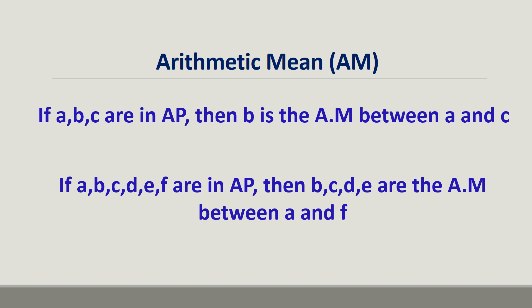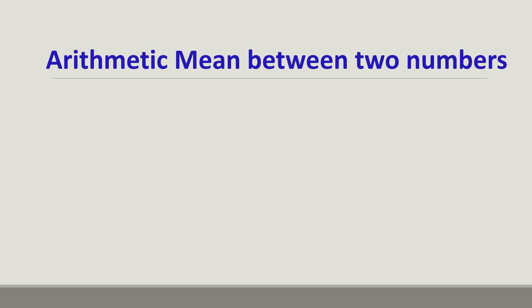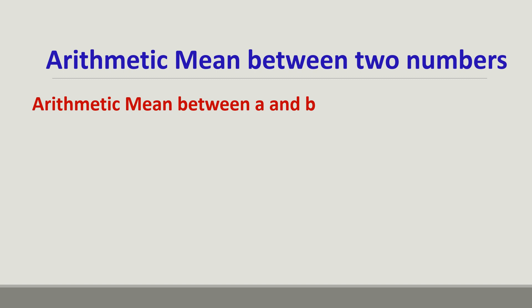So, if A, B, C, D, E, F are in arithmetic progression, then B, C, D and E are the arithmetic means between the first term A and the last term F. Thus, it is easy to find the arithmetic mean between two numbers. The formula to be used for finding the mean between A and B is X = (A + B) / 2.